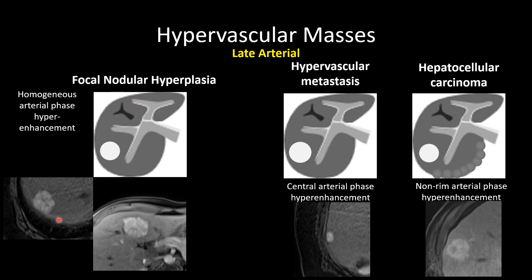On arterial phase, focal nodular hyperplasia shows hyper-enhancement with possible hypo-enhancement if there is a central scar. Hypervascular metastases similarly show arterial phase hyper-enhancement, sometimes centrally. Hepatocellular carcinoma is predominantly seen in patients with cirrhosis or risk factors for cirrhosis and should show non-RIM arterial phase hyper-enhancement. If there is RIM arterial phase hyper-enhancement, that falls into the hypovascular masses category.